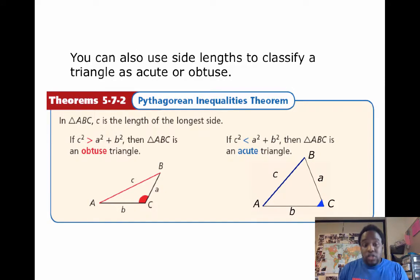We can also, based off of that, determine if triangles are acute or obtuse. So, you can also use side lengths to classify triangles as acute or obtuse. Before this, we could only classify triangles as acute or obtuse by looking at their angle measures. But now, we'll also be able to do it by looking at their sides.